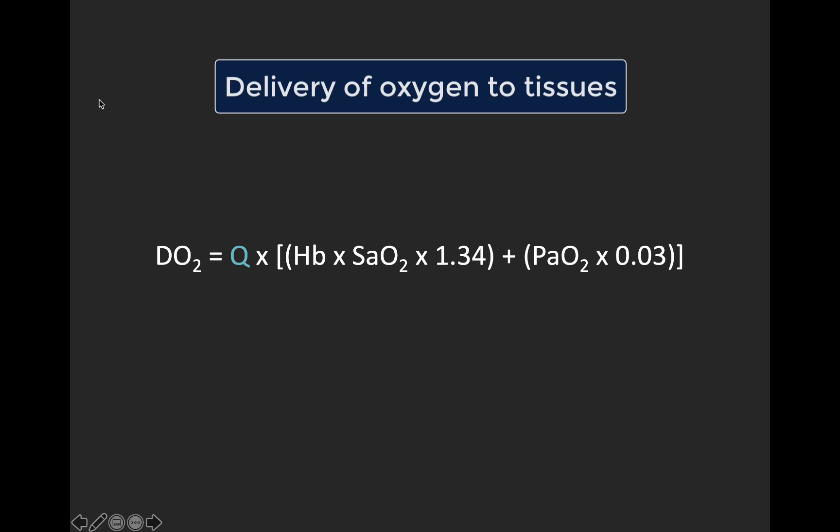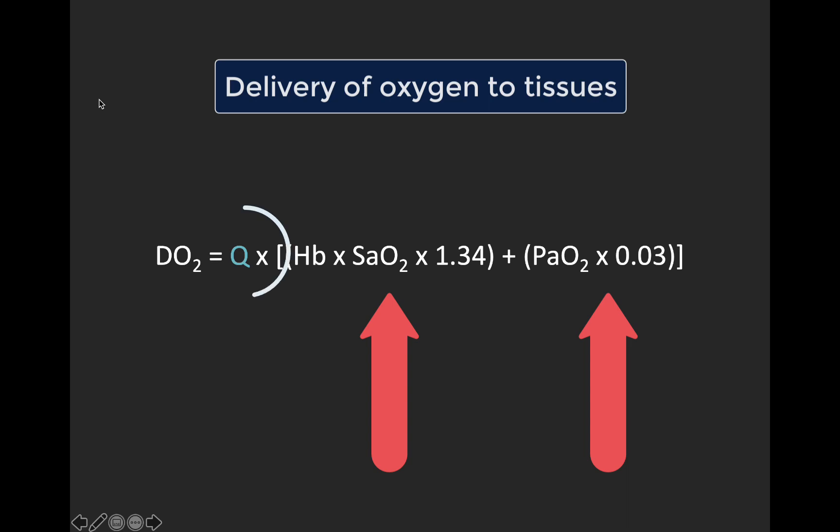The right-hand term is the oxygen dissolved in the bloodstream — a pretty minor contribution — with PaO2 being the partial pressure of dissolved oxygen in the blood and 0.03 being the solubility coefficient of oxygen. The left-hand term is the oxygen bound to hemoglobin, which is the major player. You've got your hemoglobin, your arterial oxygen concentration, and Hafner's constant. All of this gets multiplied by Q, your cardiac output, and this is how oxygen is actually delivered to your tissues.